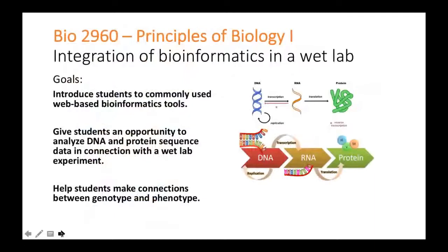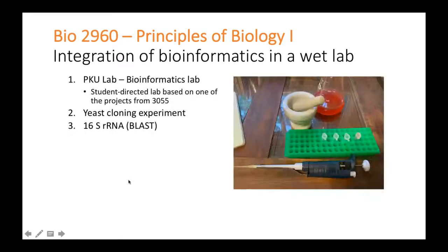Now I'm going to switch gears and talk about how we've integrated some of that lab into our Biology 1 course — Bio 2960. We're working with students at an earlier stage, their first course in biology in the department, and we still have that central dogma theme — helping students connect genotype to phenotype. We also want to help students integrate the use of web-based bioinformatics tools with wet lab experiments. I'll talk about the main three components: the PKU lab, the yeast cloning experiment, and the 16S ribosomal RNA experiment.